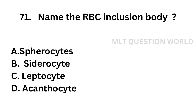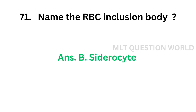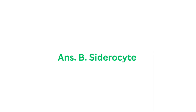Question number 71: Name the RBC inclusion body — Option A: Spherocyte, Option B: Siderocyte, Option C: Leptocyte, Option D: Acanthocyte. The correct answer is Option B, Siderocyte. Siderocyte is an RBC inclusion body. The other options are only abnormalities in size and shape.